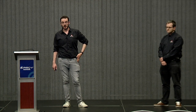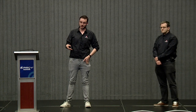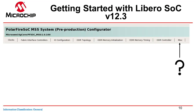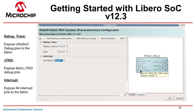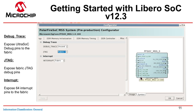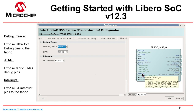So I've covered clocks, fabric interface controllers, and IO configurations. There's also DDR — configurable via DDR topology, DDR memory initialization, DDR memory timing, and DDR controller tabs. In the Miscellaneous tab, you have debug trace, JTAG, and interrupt options. Enabling fabric interrupts exposes 64 interrupt pins to the fabric. Exposing JTAG pins to the fabric lets you connect a JTAG to the MSS for debugging. Debug trace pins expose SoC debug trace pins to the fabric as well.